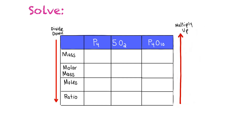Now that the equation is balanced, we set everything up in our table. We know we have 1 gram of P₄ and 15 grams of oxygen, and we want to find out how many grams of P₄O₁₀ will be produced. The first step is to find the molar mass of both reactants.